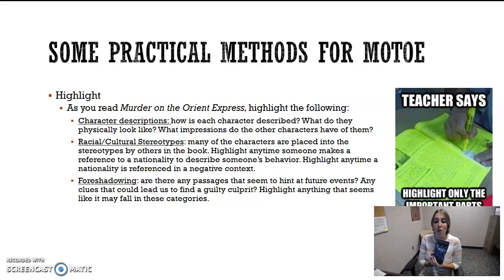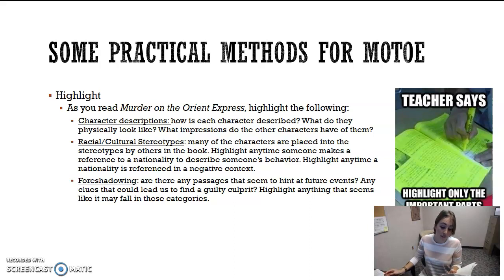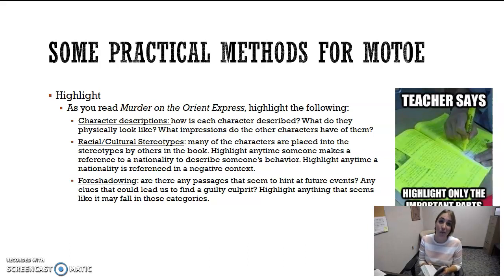In your Murder on the Orient Express book, starting on page one, first page of chapter one — in the second paragraph there's a great description of Poirot as the French lieutenant sees him. He says, 'He found a small, lean man, left up to the ears of whom nothing was visible but a pink-tipped nose and two points of an upward-curled mustache.' Based on our lecture on Monday, you already know that's going to be Poirot.